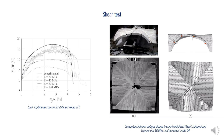Regarding the shear tests, the numerical load-displacement curves are in very good agreement with the experimental ones. The value of E that corresponds to the best fit for the experimental data is 80 MPa. The numerical collapse shape also perfectly reproduces the observed collapse mechanism.